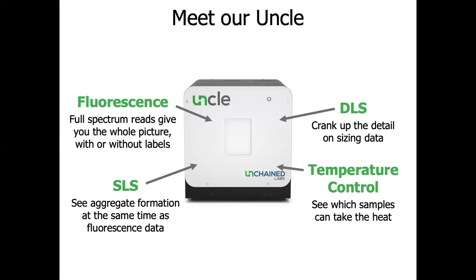This is where I would like to introduce you to the UNCLE platform from Unchained Labs. The UNCLE platform is an all-in-one biological stability platform which was built for biologics and could be an answer to many of the stability and aggregation questions that you may have. The UNCLE contains three different detection methods: fluorescence, static light scattering (SLS), and dynamic light scattering (DLS). The fluorescence gives you a full spectrum between 250 nanometers and 720 nanometers. Additionally, the UNCLE has the capability to temperature control, which can be user-defined between 15 degrees and 95 degrees Celsius.